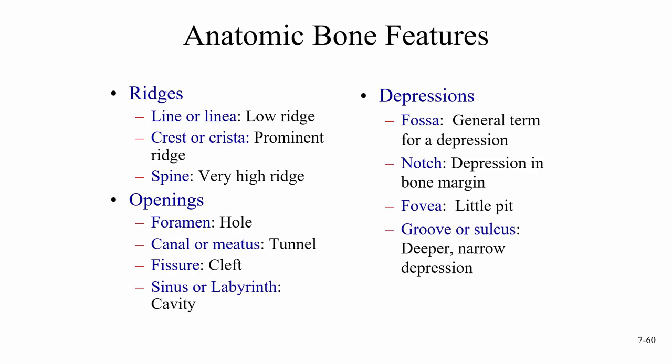A spine is a very high ridge. For openings: a foramen is a hole; a canal or meatus is a tunnel; a fissure is a cleft; and a sinus or labyrinth is a cavity. For depressions: a fossa is a general term for a depression; a notch is a depression in a bone margin; a fovea is a little pit; and a groove or sulcus is a deeper, narrow depression.